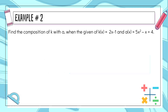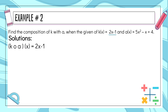Now let's move on to example number 2. Find the composition of k with a, when the given of k is 2x minus 1, and the given of a is 5x squared minus x plus 4. Same procedure — copy the first function which is 2x minus 1. So the composition of k with a is equal to 2x minus 1.